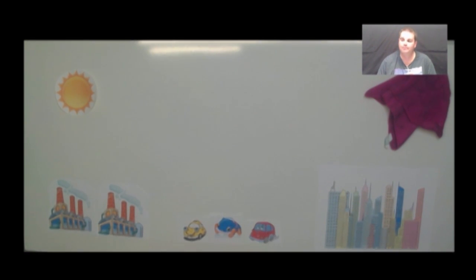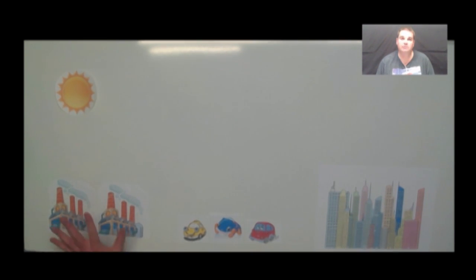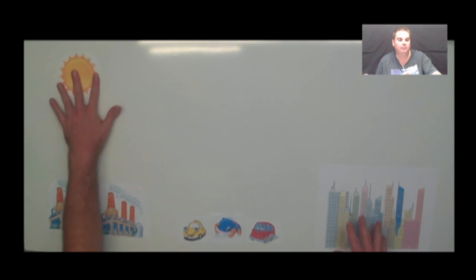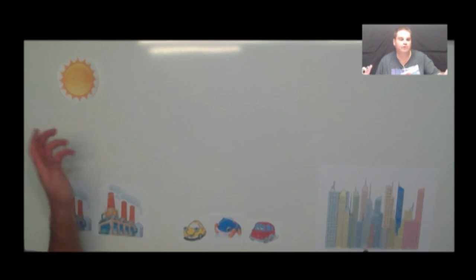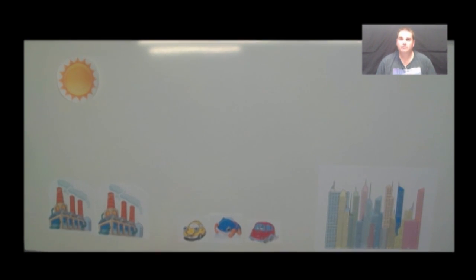So what I've got here is our little city — we've got our factories over here, we've got our cars, and we've got our city as well where we live. And then we've got our sun shining down brightly, giving us lots of sunlight. So as we know, because of the Industrial Revolution, the way that we burn fossil fuels has greatly impacted upon the world.